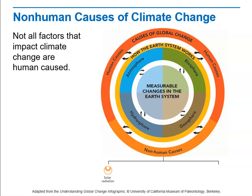Some of these factors include solar radiation. We already started talking about how light is transferred from the Sun — it is transported to the Earth and converts to heat. This can be variable depending on what happens to the Sun.